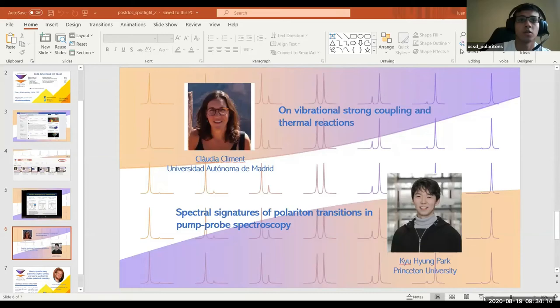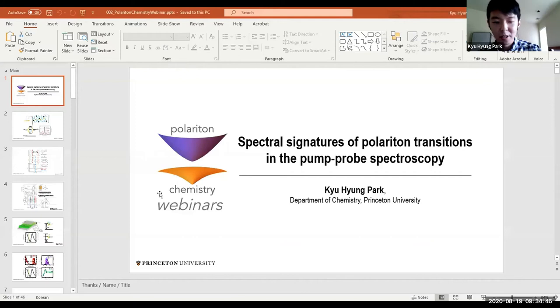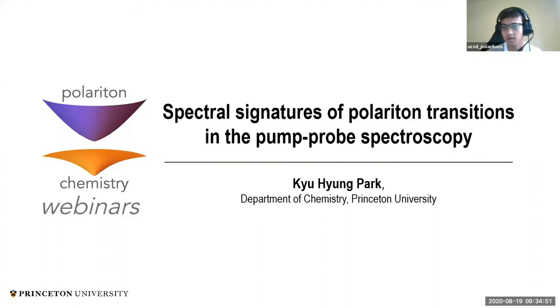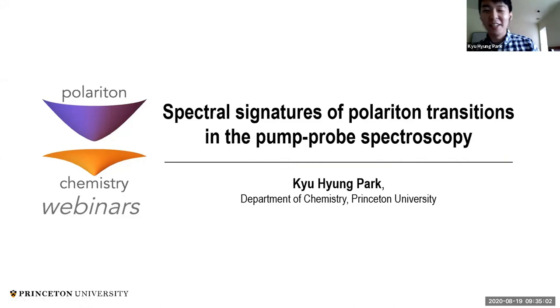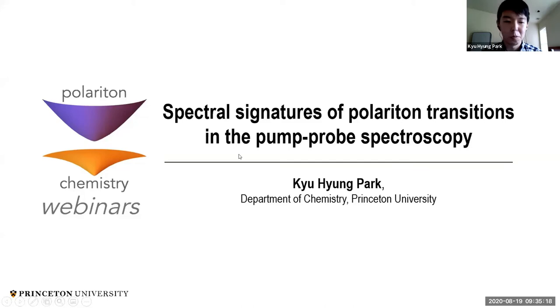Our next speaker is Dr. Q-Hyung Park. He got his bachelor's in science and his PhD from the Department of Chemistry at Jeonbuk National University in the Republic of Korea, under Professor Dong-Ho Kim, and is now doing a postdoc at Princeton University. Welcome, Dr. Park — you can share your screen and start. Thank you for the nice introduction and for the opportunity to present here. I'm Q-Hyung Park, a postdoc in Scholes's group at Princeton University, and I'm going to talk about the spectral signatures of polariton transitions in pump-probe spectroscopy.